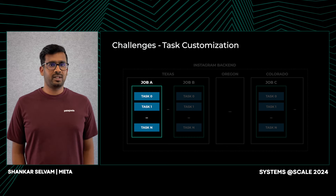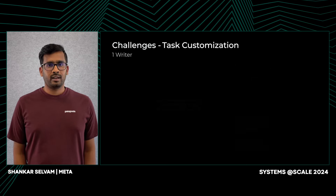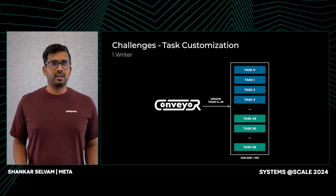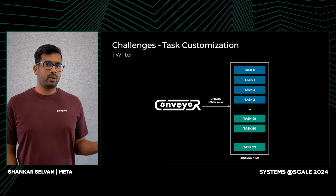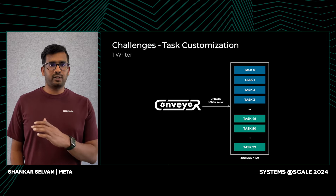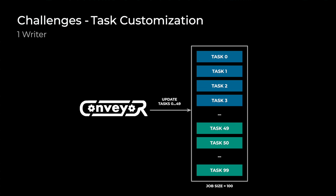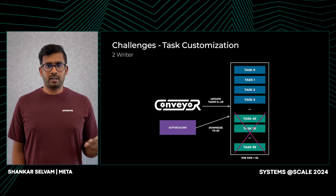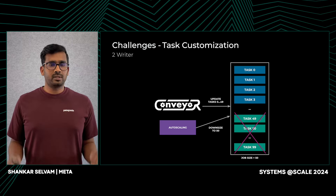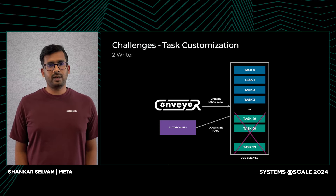Let's look at how Instagram uses task customization to manage its jobs. Instagram uses Conveyor, which is Meta's continuous deployment system, to safely and automatically roll out changes to production. Conveyor has a feature called gradual rollout that, if enabled, updates a specific set of tasks before updating the entire job. In this example, we can see how Instagram is using Conveyor to update 50% of the job, which translates to updating the first 50 tasks. Instagram server also uses autoscaling to efficiently size its jobs. While the push is in progress, the autoscaling system could decide to downsize the job. If autoscaling shrunk the job from 100 tasks to 50 tasks, the entire job is now running the new binary, which poses a significant reliability risk.